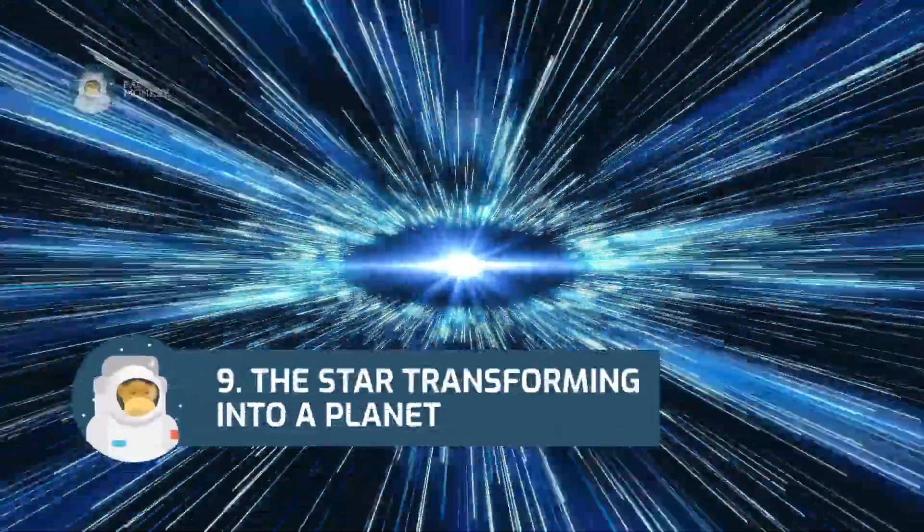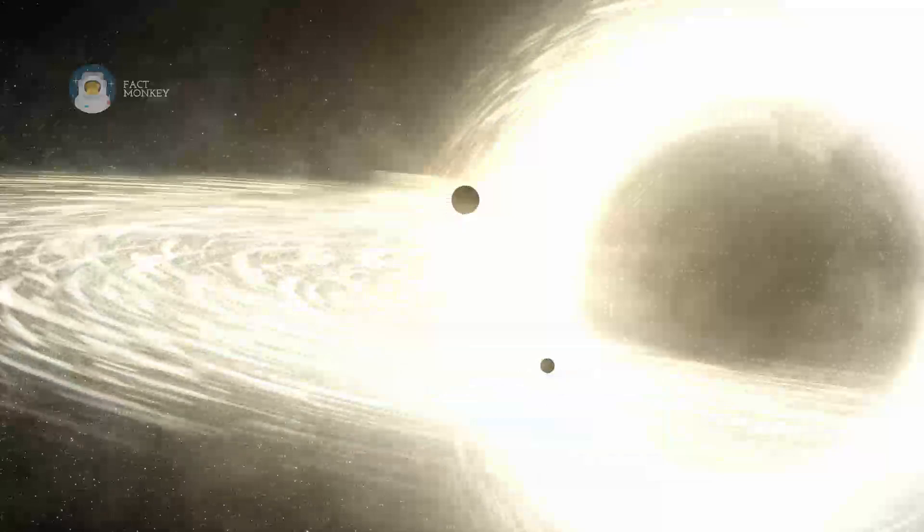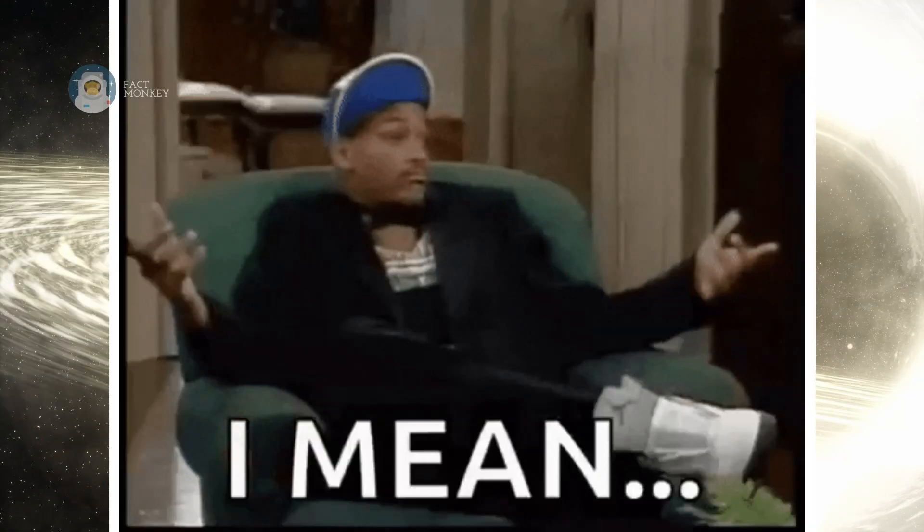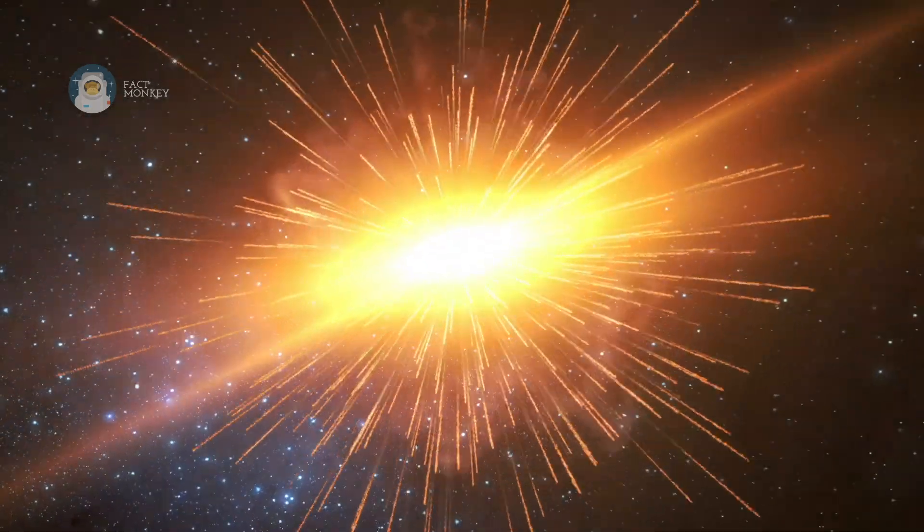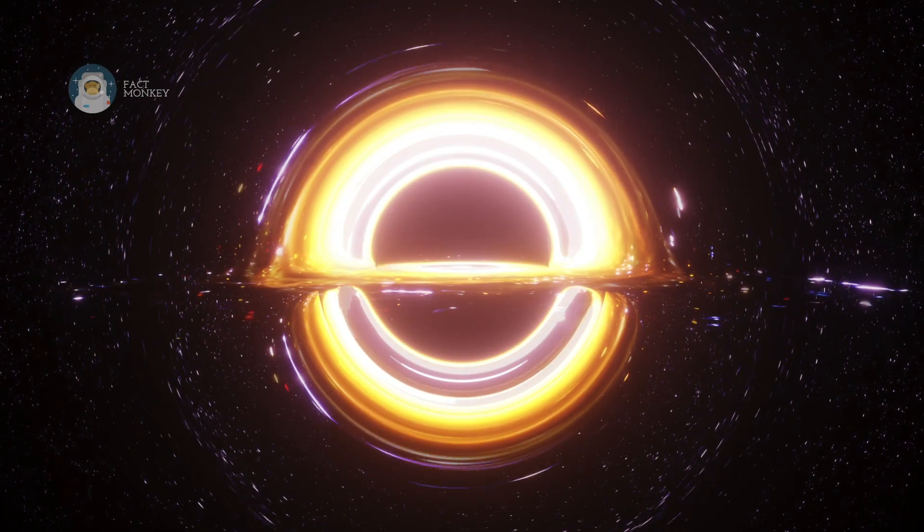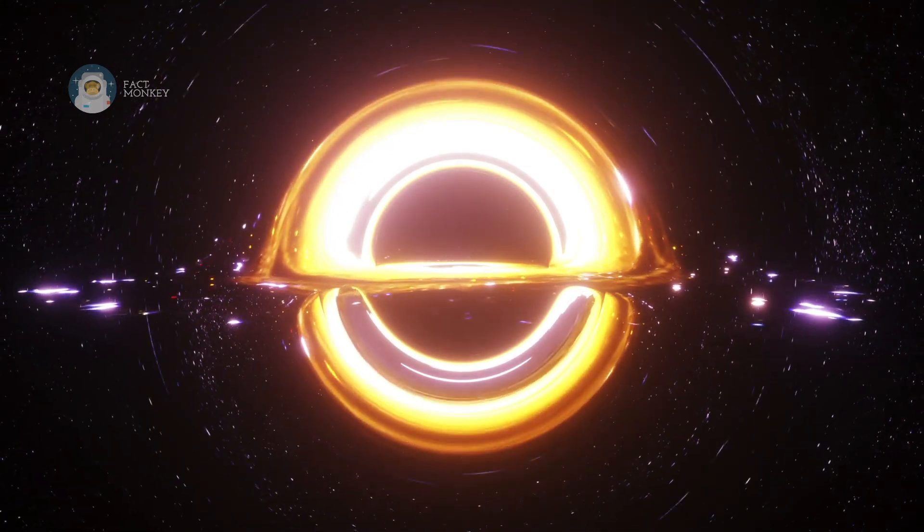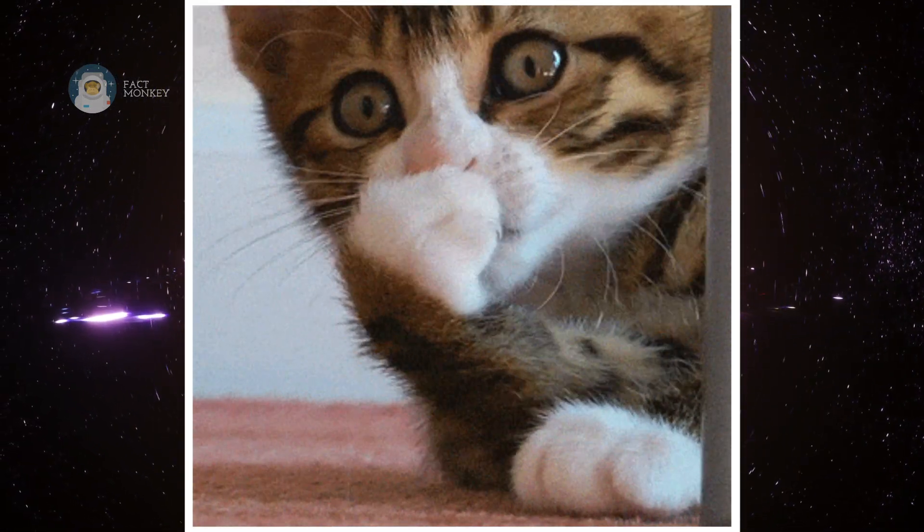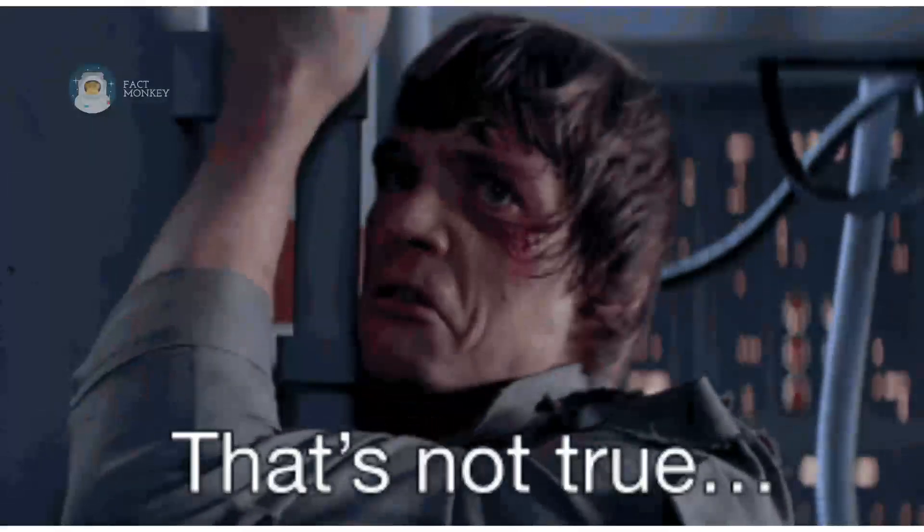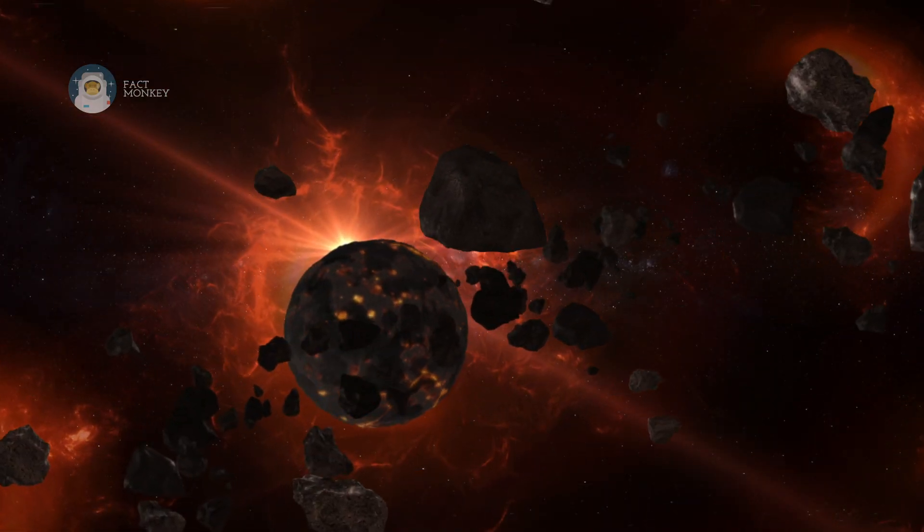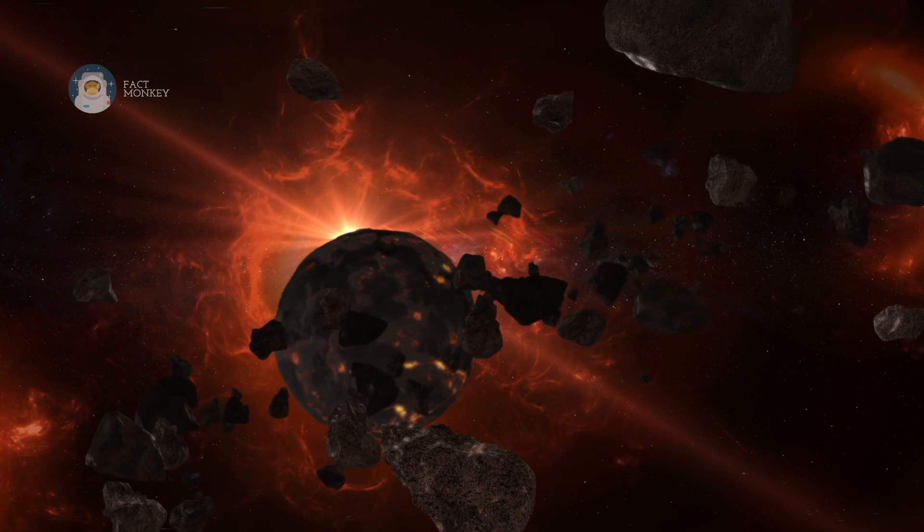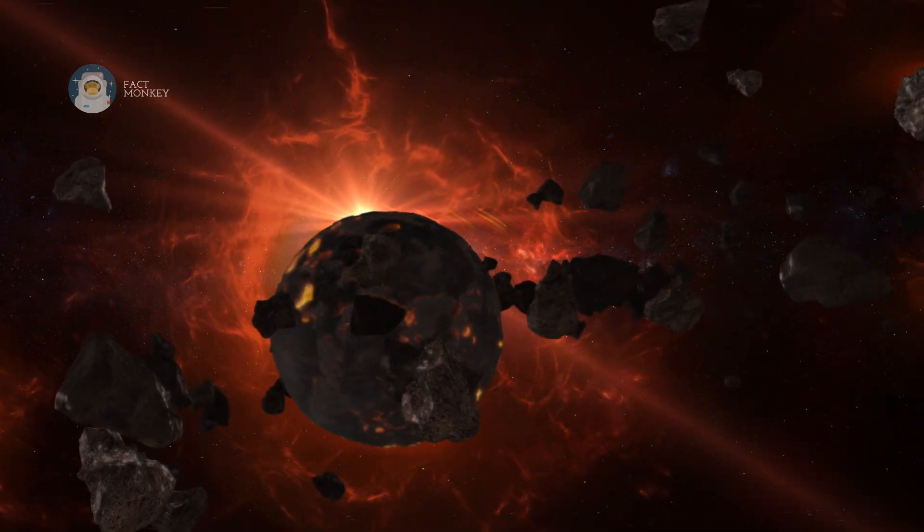The star transforming into a planet. Everyone knows that being close to a black hole is a death sentence. There isn't anything in this world that can get close to a black hole without being torn apart as a result of the black hole's extreme gravity. So it might come as a surprise that a star was able to not only get close to a black hole, but to also brush against it and survive the whole ordeal. As a matter of fact, the star didn't just survive it, it's transforming into an actual planet.